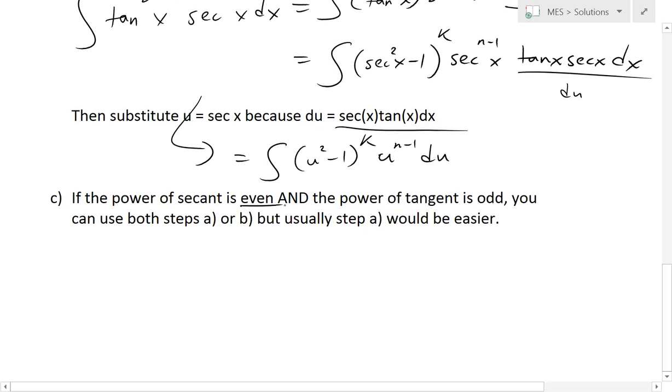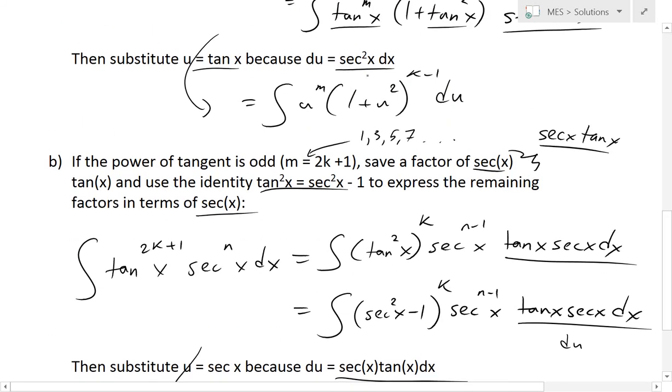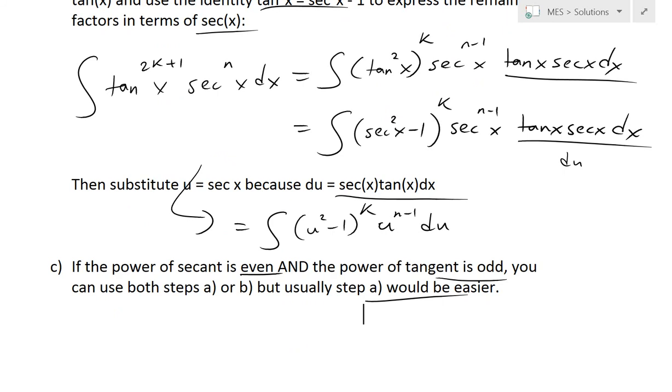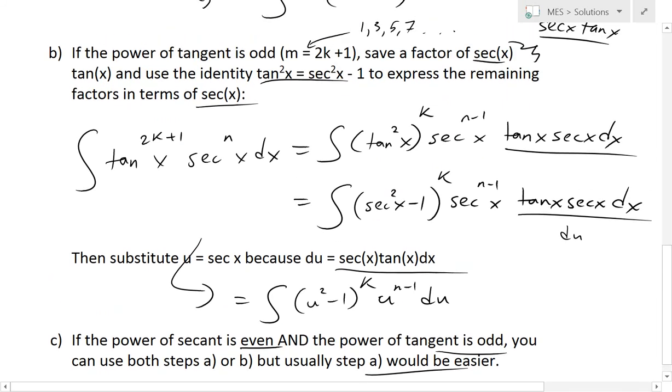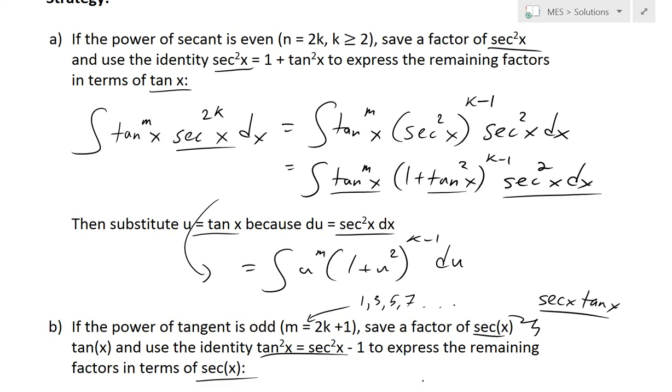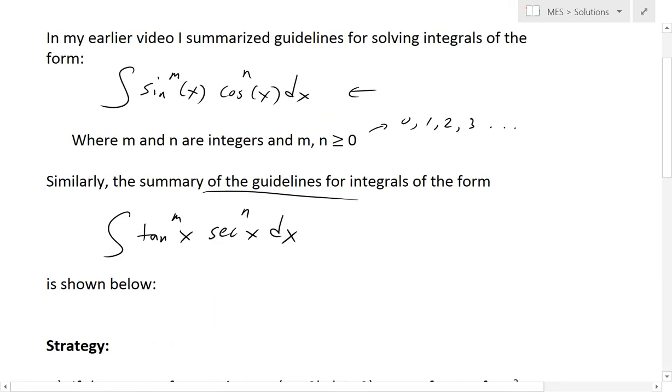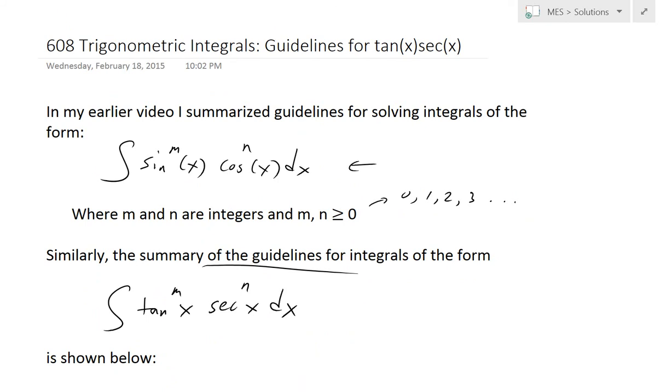For the final step: if the power of secant is even and the power of tangent is odd, you could use both steps A or B, but usually step A is easier because the derivative of tan x equals sec²x, which is just one term instead of tan x secant x. If secant is even, regardless if tangent is odd, just do step A usually. Thanks for watching, you can download these notes in the link below, and stay tuned for another Math Easy Solution.